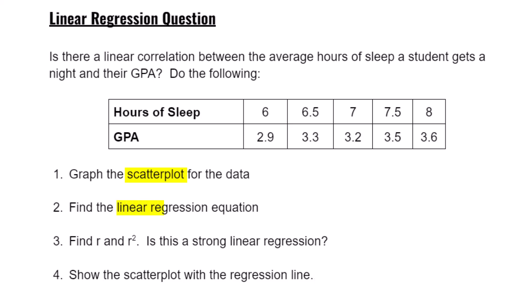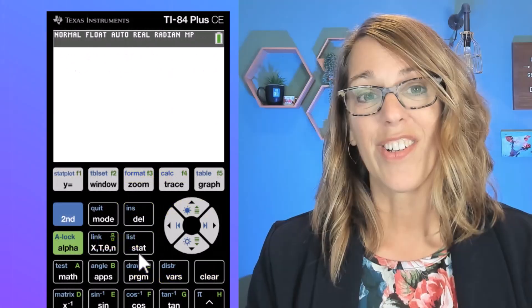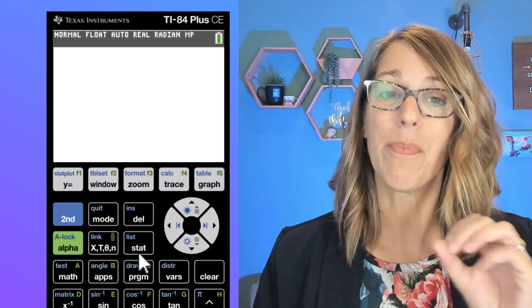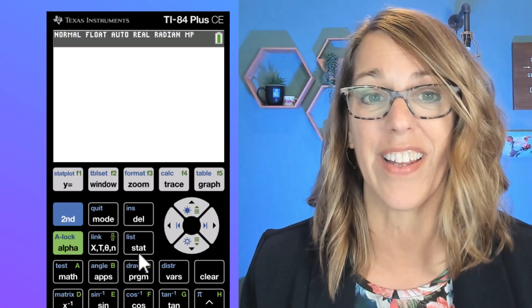we want to find the linear regression, along with that linear regression we want that correlation coefficient r and r squared, and then we want to show the scatter plot along with that regression line. Your TI-84 makes such easy work of this, starting with putting this into the calculator.